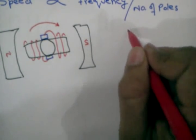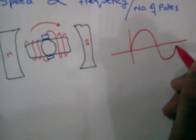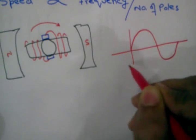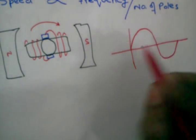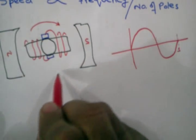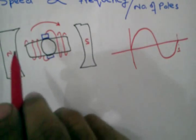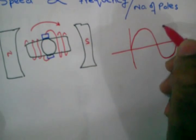So for example, if you draw its graph, in one second if the motor completes its one 360-degree cycle, this completes one rotation in one second, and its frequency will be one hertz.